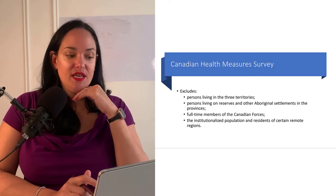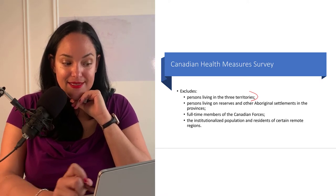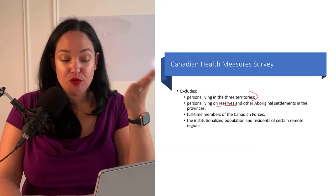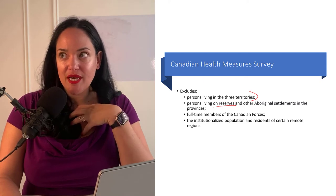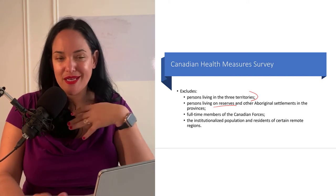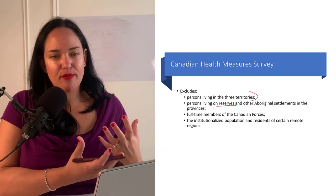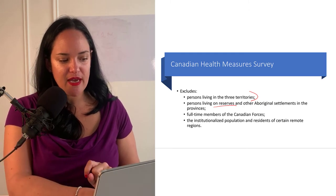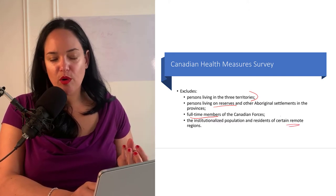Some limitations of the Canadian Health Measure Survey are that it doesn't include people living in the three territories or people living on reserves. That's a difficult issue because some people on reserves don't want these researchers coming in or taking their blood, which is fully understandable. However, from a health promotion standpoint, it means we don't always have great data about those populations. Full-time members of the Canadian Forces and residents of more remote regions are also excluded, so it is representative, but not fully representative.